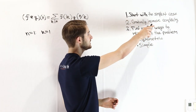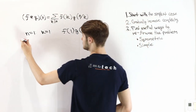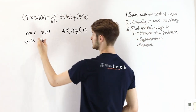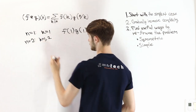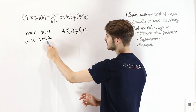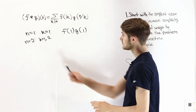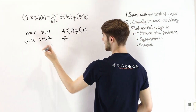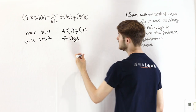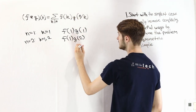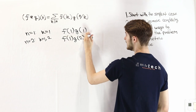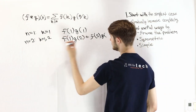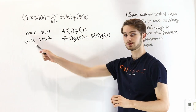Now let's gradually increase the complexity and try n equals 2. The number 2 has two different factors: k equals 1 and k equals 2, because both divide 2. Plugging these in, we get f of 1 times g of 2 over 1 — which is g of 2 — plus f of 2 times g of 2 over 2, which is g of 1.